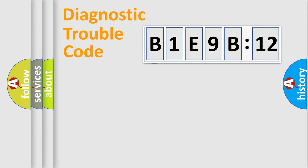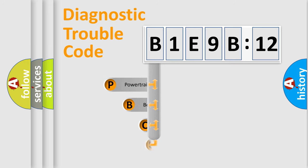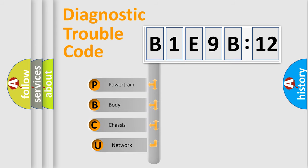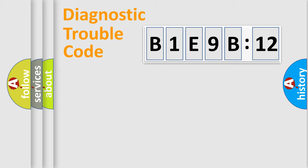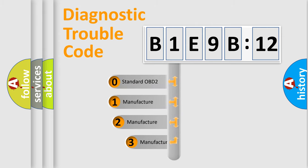Let's do this. First, let's look at the history of diagnostic fault code composition according to the OBD2 protocol, which is unified for all automakers since 2000. We divide the electric system of an automobile into four basic units: Powertrain, Body, Chassis, and Network. This distribution is defined in the first character of the code.